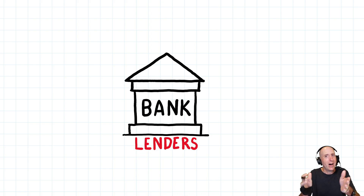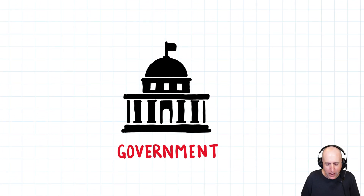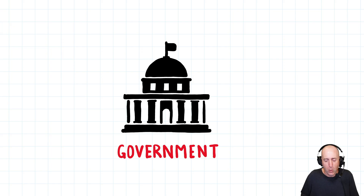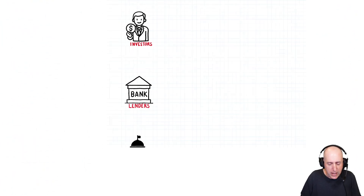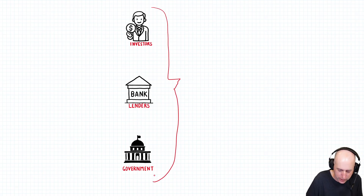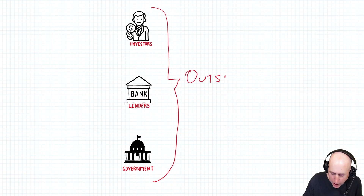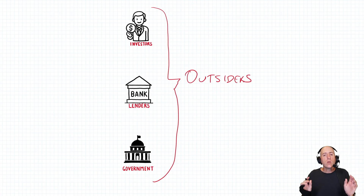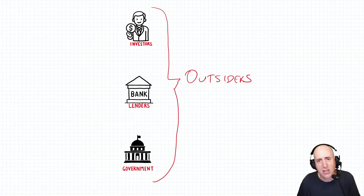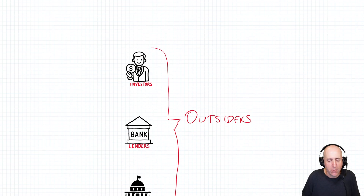Can you guess who I'm going to say? The government. Even if I don't have investors, even if I don't have lenders, I've got to produce financial reports for the government. Why? Because the government wants to tax me — they want to take their 20% off the top. So I'm obligated to make financial reports for the government. These are really the three key outside constituents interested in our financial reporting: investors, lenders, and government. They're all outsiders to the company, using my financial information to make decisions about the company — whether to invest, whether to loan money, and how much to tax.